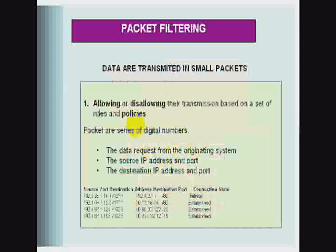The next function is circuit relay and application gateway. Circuit relay filtering takes control a step further than packet filtering. Also called a circuit relay, this is a firewall approach that validates a connection before allowing data to be exchanged. The firewall doesn't simply allow or disallow packets, but also determines whether the connection between both ends is valid according to configurable rules, then opens a session and permits traffic only from the allowed source for a limited period of time.